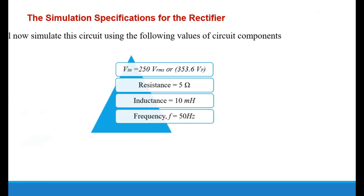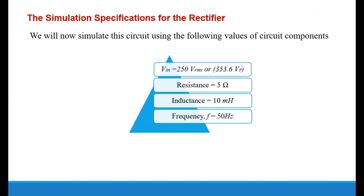Before we do the simulation we have to know the specifications for this rectifier. We will now simulate this circuit using the following values: Vn equal to 250 V RMS, load resistance R equal to 5 ohm, inductance equal to 10 millihenry, and operating frequency equal to 50 hertz. Let's go to the MATLAB Simulink window to do the simulation of the single phase controlled rectifier.